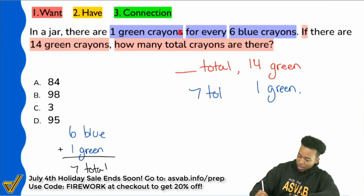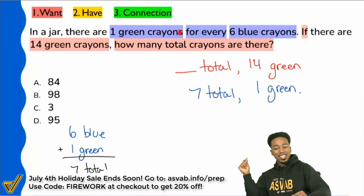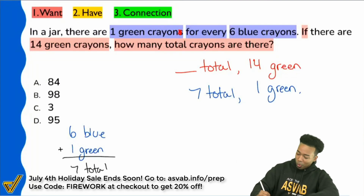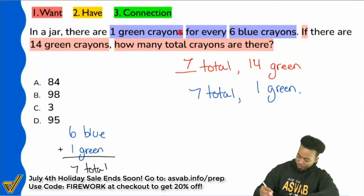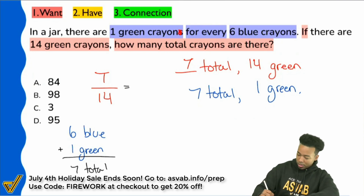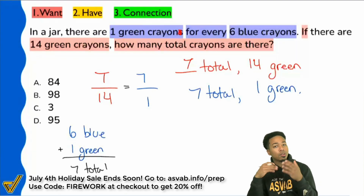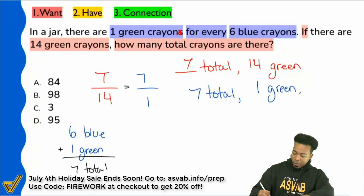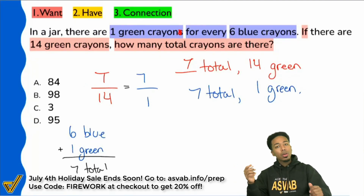I'm sure if you're watching this video, you've seen a question like this and possibly gotten tripped up — I don't want that to happen. Now that we have it set up as total to green and total to green, we're good. We're going to set up our proportion: T to 14 compared to seven to one. You can use mental math here — if we go from one to seven, that's times seven, so 14 times seven is going to be our answer. That might give you 98, or you can just go ahead and cross-multiply.